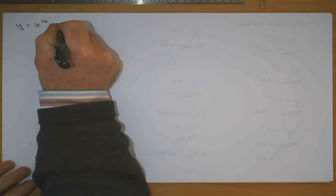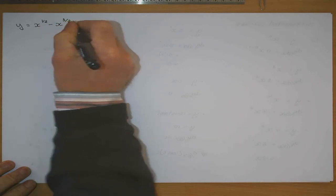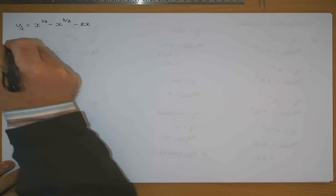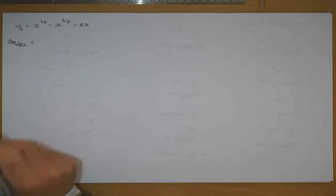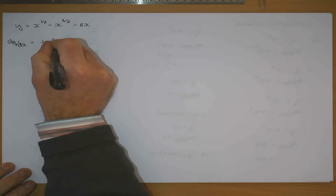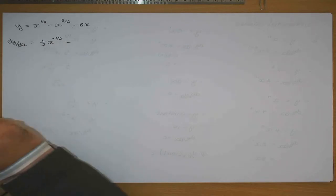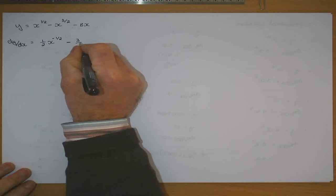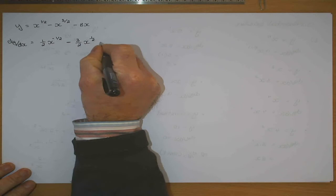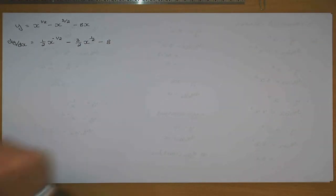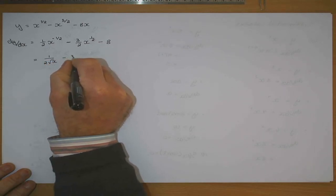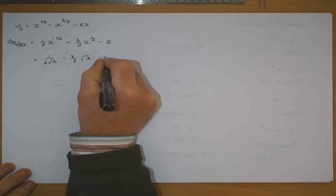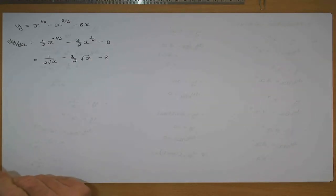If y was equal to x to the power of a half minus x to the power of 3 over 2 minus 8x, when terms are added or subtracted you differentiate them one after the other. So dy/dx becomes one half x to the minus a half, minus 3 over 2 times x to the power of a half, minus 8. That is 1 over 2 root x minus 3 over 2 times the square root of x minus 8.